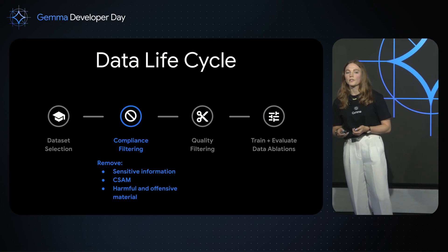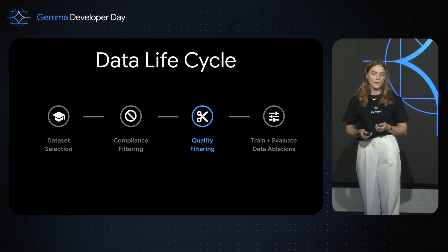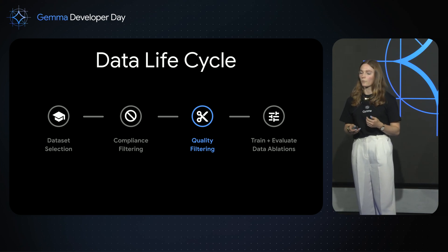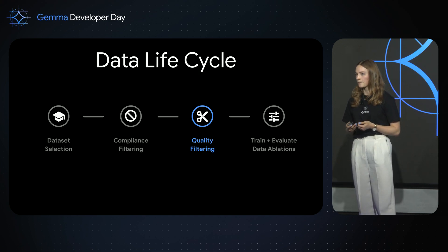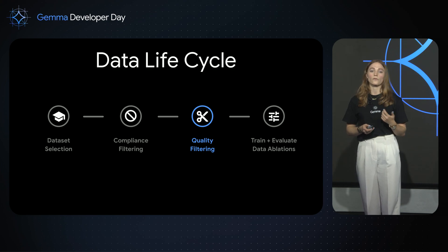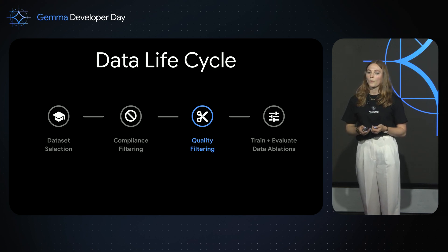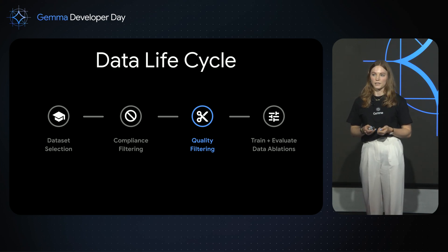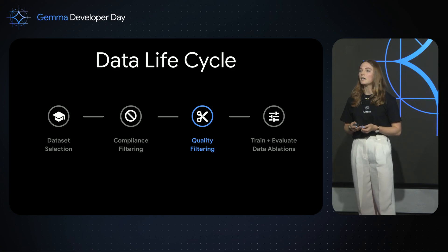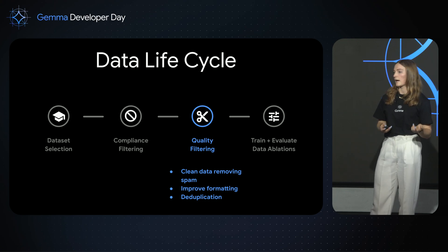Once we've compliance filtered data, we reach quality filtering. Quality filtering is essential because we predominantly train on web-based data, and the quality of web data varies drastically. We need to remove spam and extensively clean our data so we're training on the highest quality subset of tokens. This includes deduplication of content both within and across sources. We predominantly train on high quality tokens, but we simultaneously train on a small subset of low quality data to ensure robustness to spelling errors, typos, and grammatical mistakes that users may encounter when prompting Gemma.